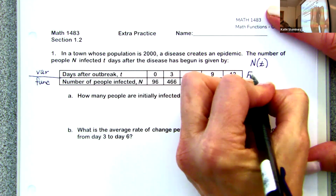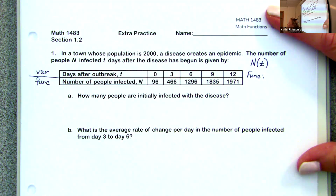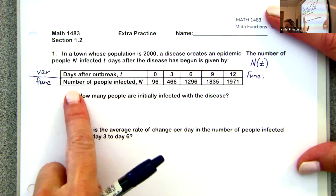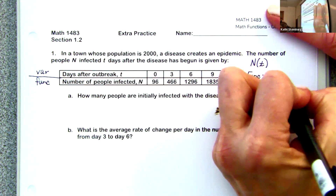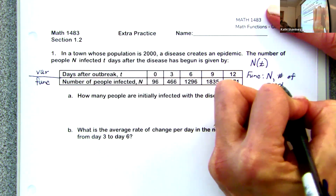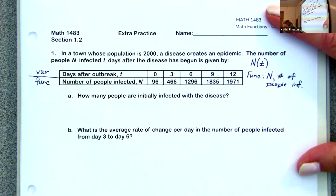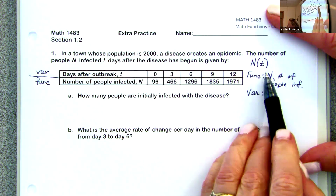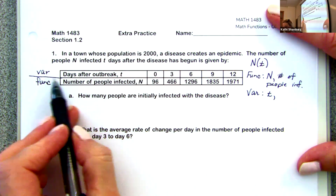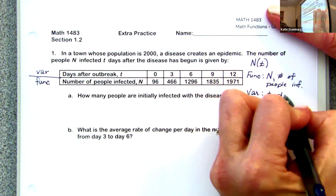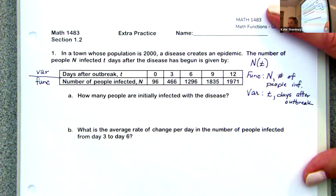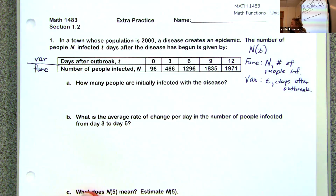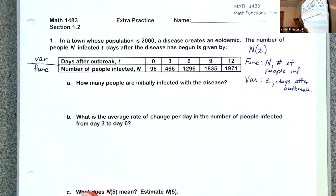Now we'll define each part. The function N is found at the bottom of the table — N is the number of people infected. The variable T is always what's inside the parentheses, and from the table it says days after outbreak. Defining function and variable from a table is straightforward since they're labeled for you. The biggest error is getting them mixed up, but variable always goes on top.